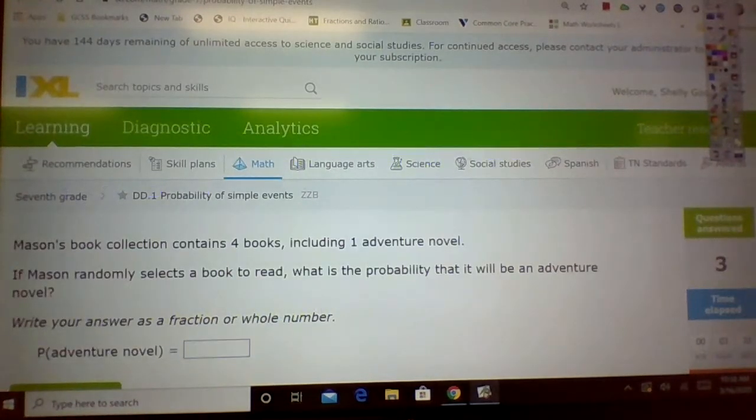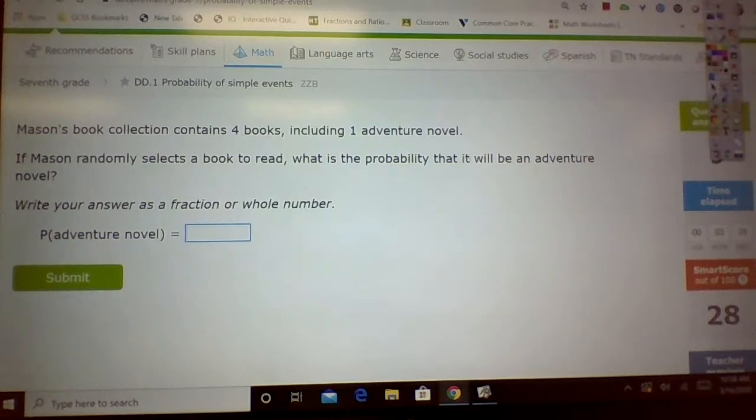Let's look at one more. Mason's book collection contains four books, including one adventure novel. If Mason randomly selects a book to read, what is the probability that it will be an adventure novel? Well, how many books does he have total? He has four. How many of those are adventure? One. So my answer is one-fourth. This time it says write it as a fraction or a whole number, and it is a fraction. So one-fourth is my answer.